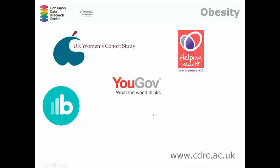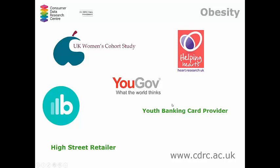YouGov data is also available — survey data from February 2018 to 2019 including supermarket shopping behaviours, attitudes towards sustainability, commuting and food behaviours, location, age, gender, and socioeconomic status. It's a really rich dataset about behaviours. There are also transactional data from companies that do not wish to be named at this point, but they provide really interesting data.